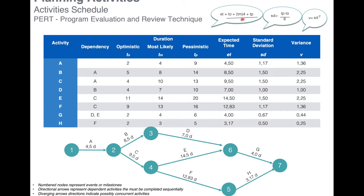Why divide by six? Because the most likely duration has a weight of four, while optimistic and pessimistic each have a weight of one — making six total. So we divide by six and get the expected time of the activity, which is a combination of all three scenarios. Here, the expected time is four and a half days.